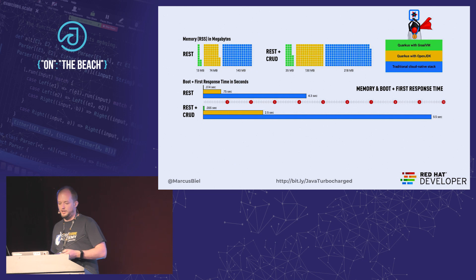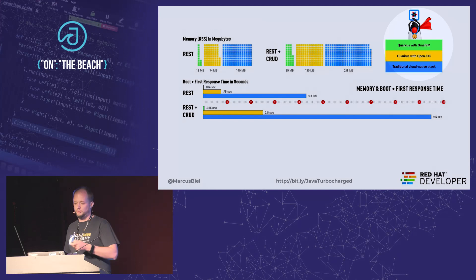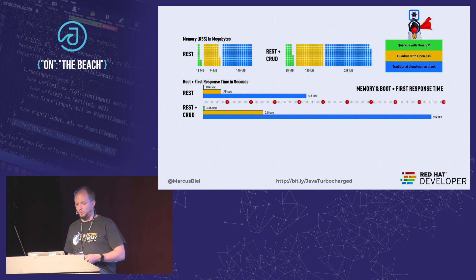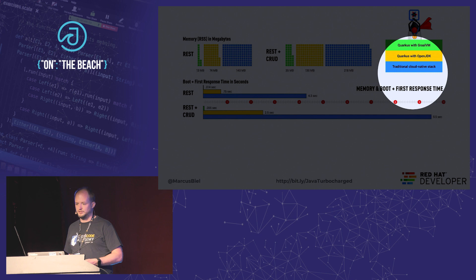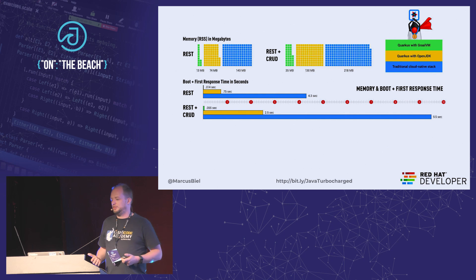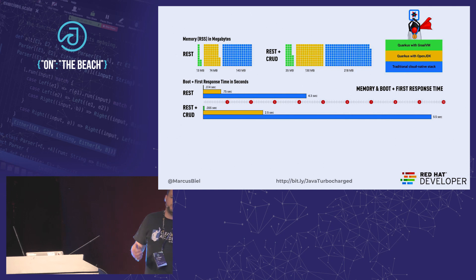So, here we have three different applications. First, Quarkus running on GraalVM, running as a native executable. Second, Quarkus running on OpenJDK — the yellow one — running on the HotSpot VM. And then we compare that to a traditional cloud-native stack: for example, an application running on Tomcat, WildFly, JBoss, or even Spring Boot.